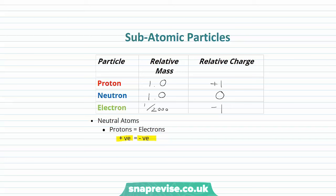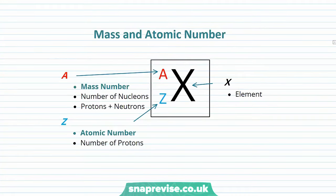So let's have a look at how the number of protons, neutrons and electrons are represented in a periodic table. The way this is done is through mass and atomic number. You'll recognise this representation of an element with its mass and atomic number from your periodic tables. X stands for our element — this could be any element in the periodic table. A is our mass number, which is the number of nucleons, so that's protons and neutrons. Z is our atomic number — this is just the number of protons.